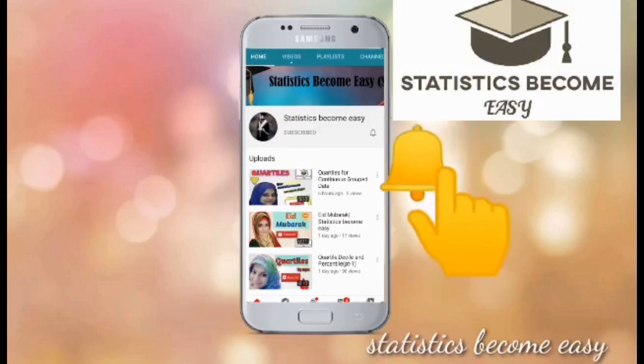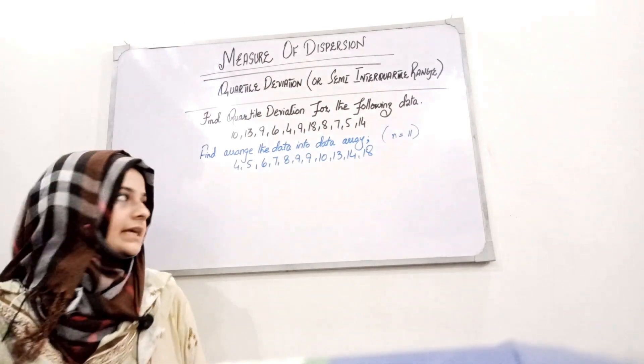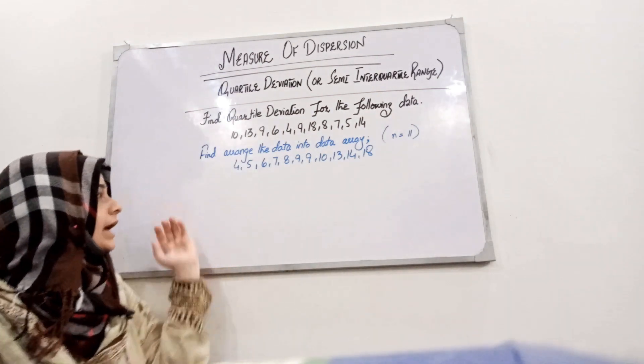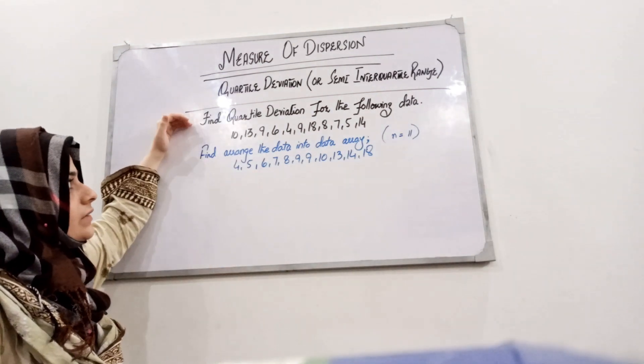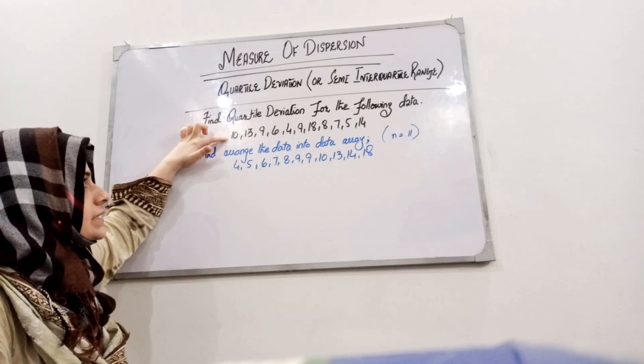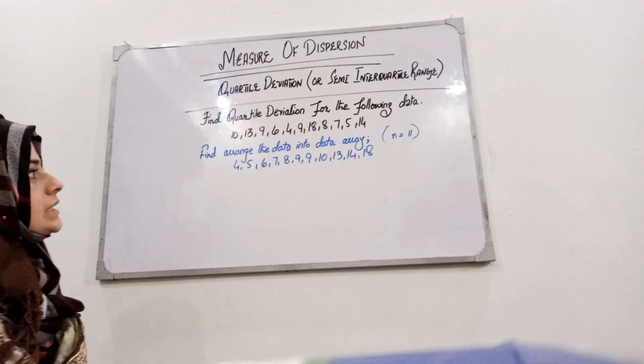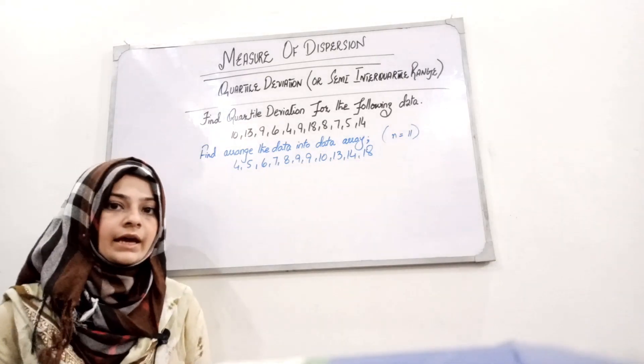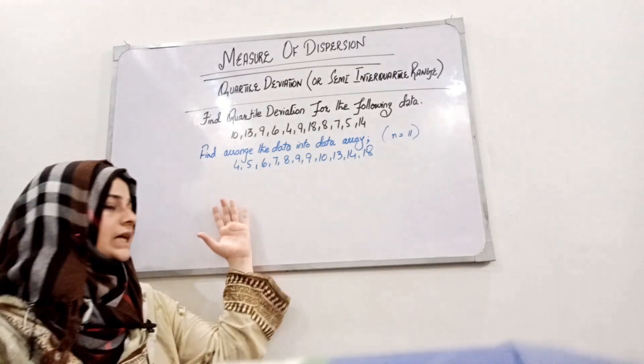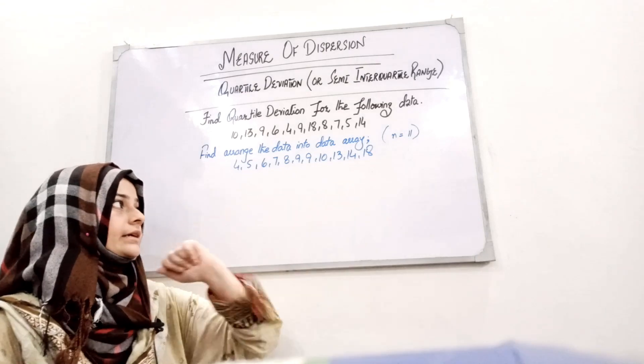So students, here we have an example and we need to find out the quartile deviation for the following data. It is unarranged data, so first we know that we have to arrange the data in ascending order. For saving time, I've already arranged it, and...